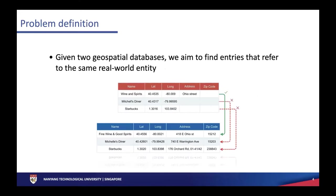Another example that shows the challenges of this work: if we try to match 'wine and spirits' with 'fine wine and good spirits' in the first example, which actually corresponds to the same real-world entity, string similarities are not very useful since the two names have a string similarity that is not that high. In the second example, we see the opposite — Mitchell's Dinner and Michelle's Dinner. The string similarity is very high, but the names are different. This calls for a solution that can pay different attention to different words.